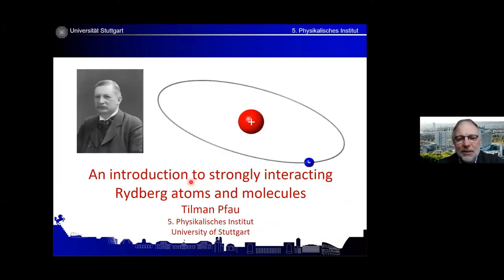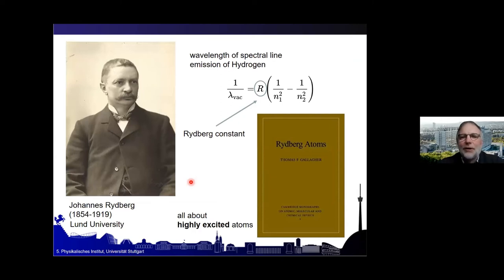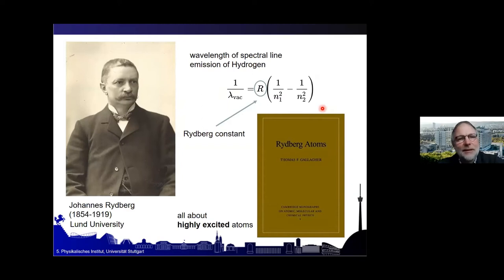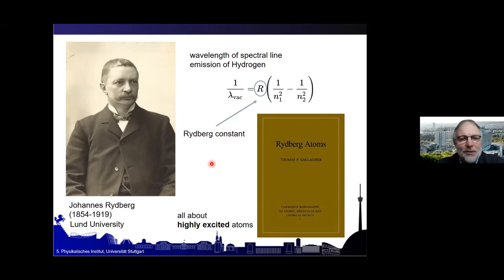Let me start by showing the picture of Johannes Rydberg, who was a professor in Sweden at Lund University. He is most famous for the Rydberg formula describing the excitation spectrum in the hydrogen atom, with the Rydberg constant in front of this famous formula. At the time, that was pioneering work that led to quantum mechanics as we know it today.